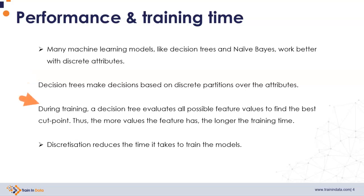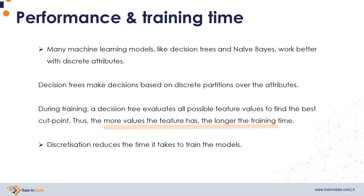During training, a decision tree will take a feature, evaluate all possible values of that feature, and then decide which is the best cut point — the one that maximizes the purity of the end branches. So the more values the variable has, the longer the training time, because it has to examine more values. When we discretize a variable, we are naturally reducing the number of values, therefore accelerating the training time of decision trees.